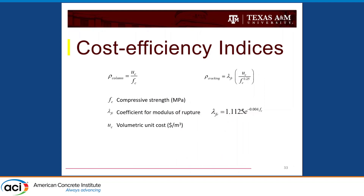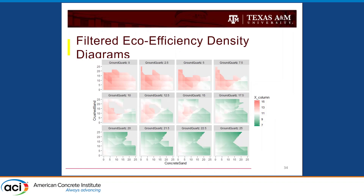We're also creating these indices in terms of cost — the only change is replacing embodied CO₂ with unit cost at the top. The goal of these indices is to minimize them: the most cost-efficient mix has the lowest volumetric unit cost and the highest compressive strength. The lower the index, the better the mix for that particular application. We can use these diagrams and filter out mixes that don't meet a certain strength threshold.